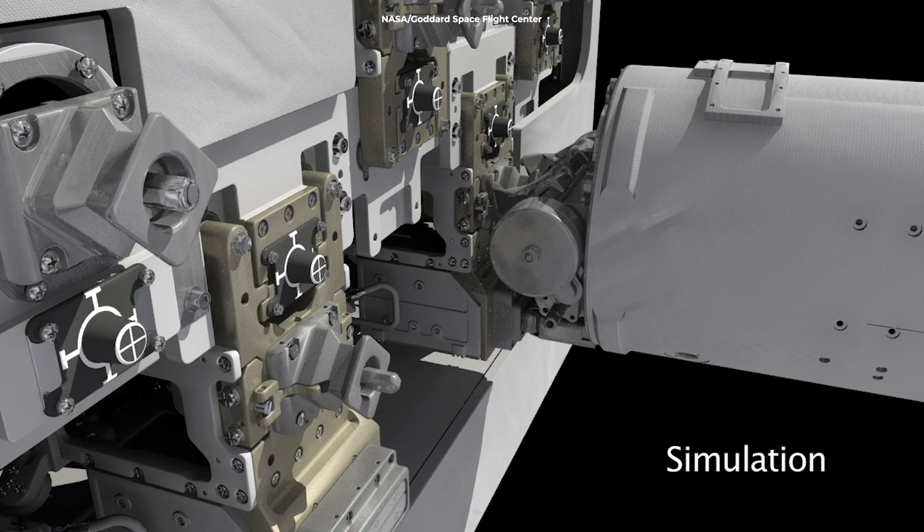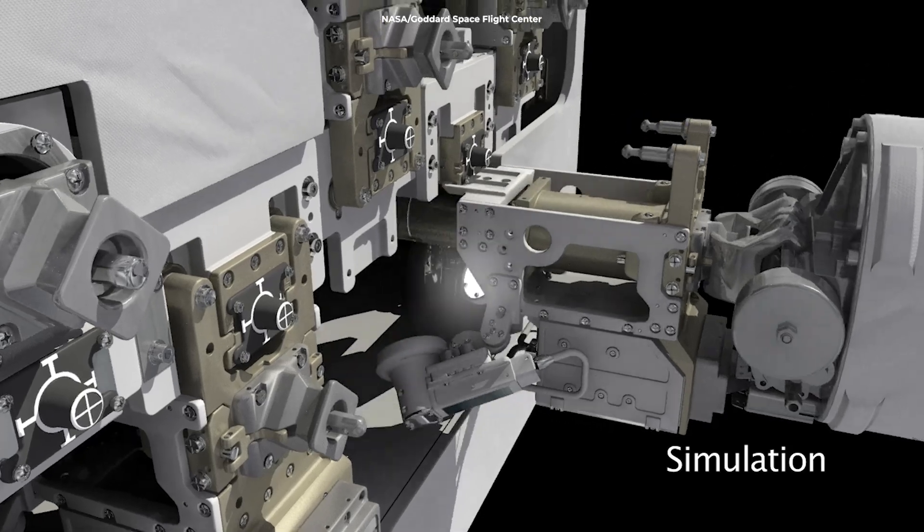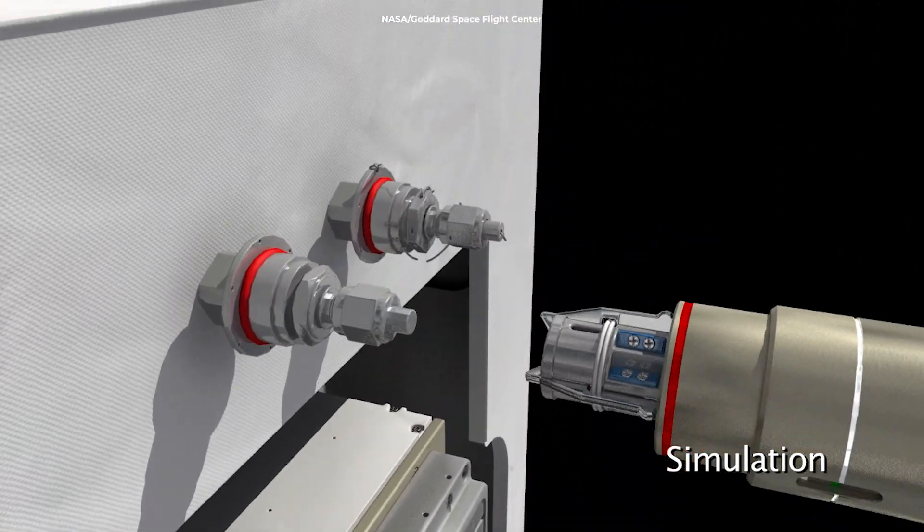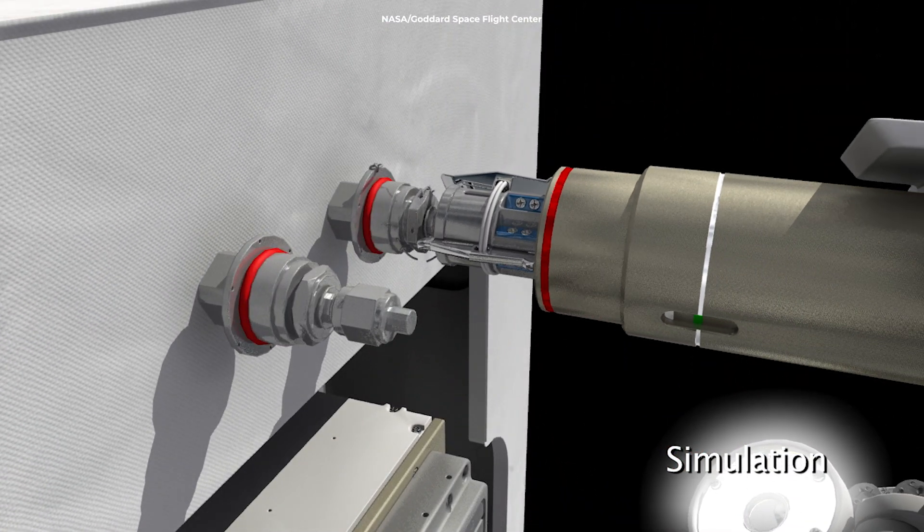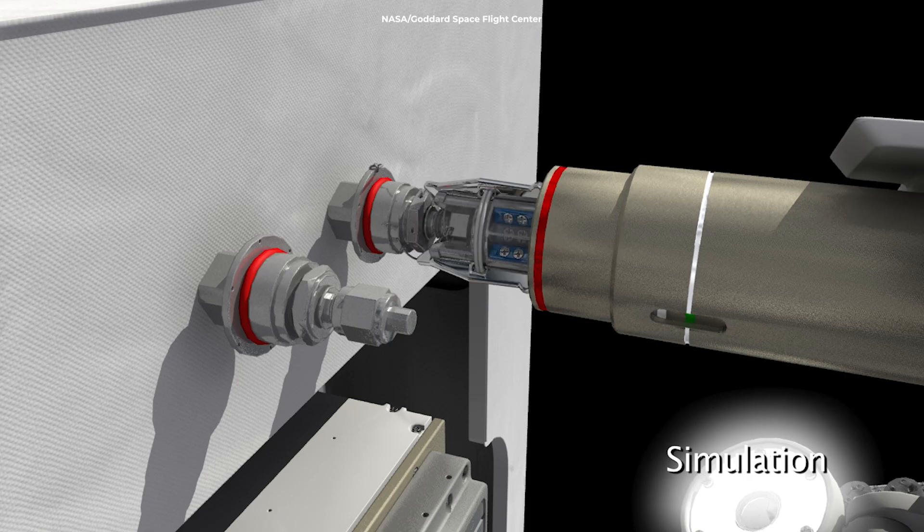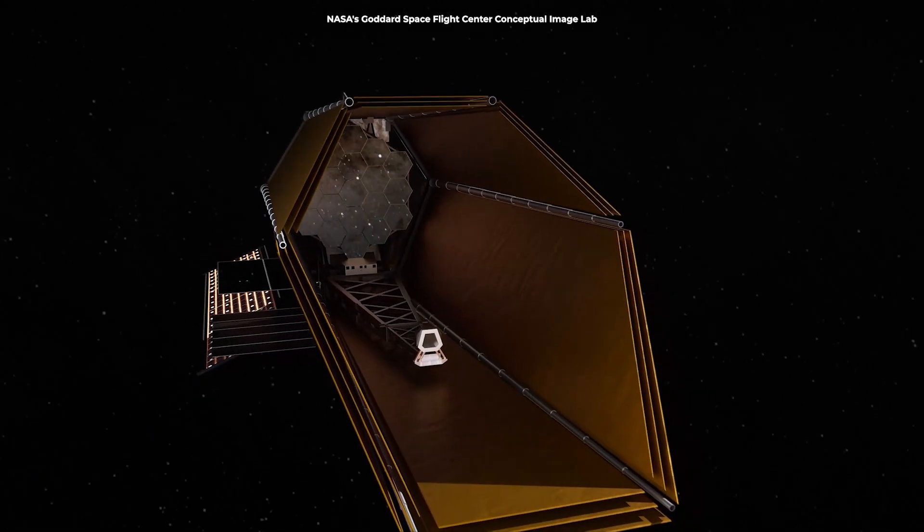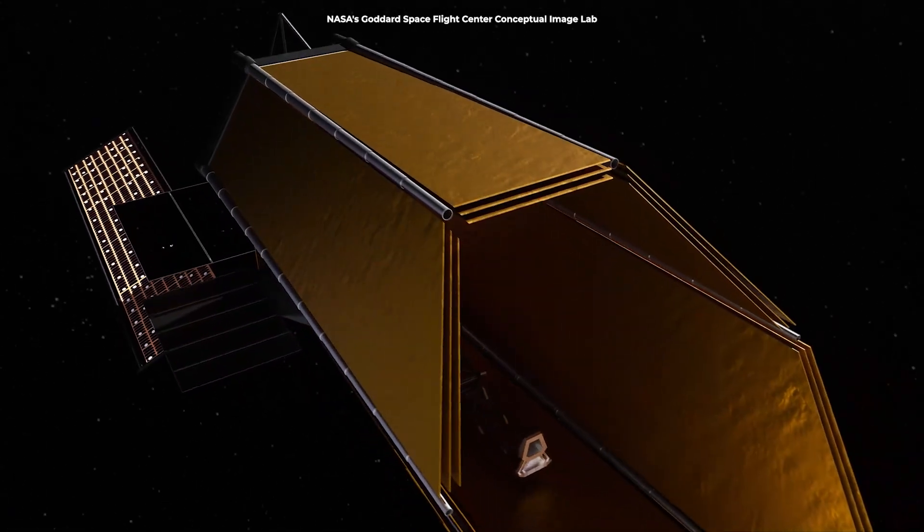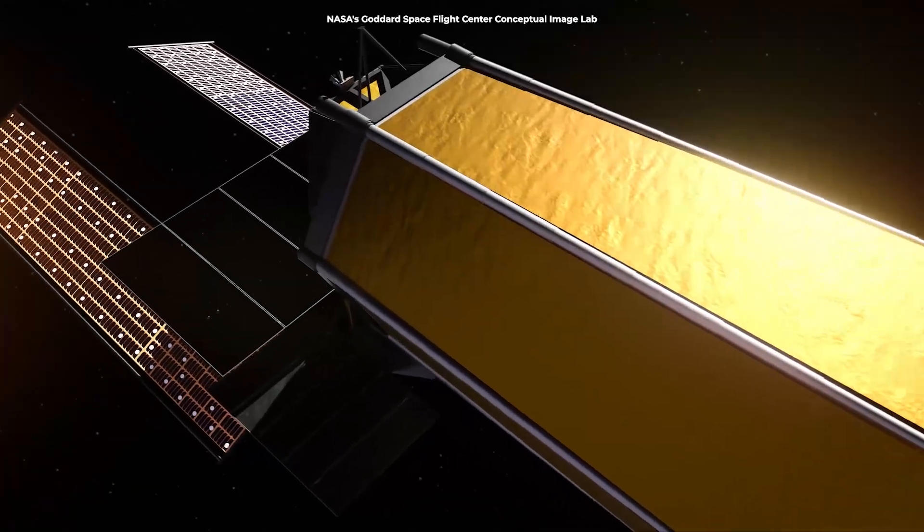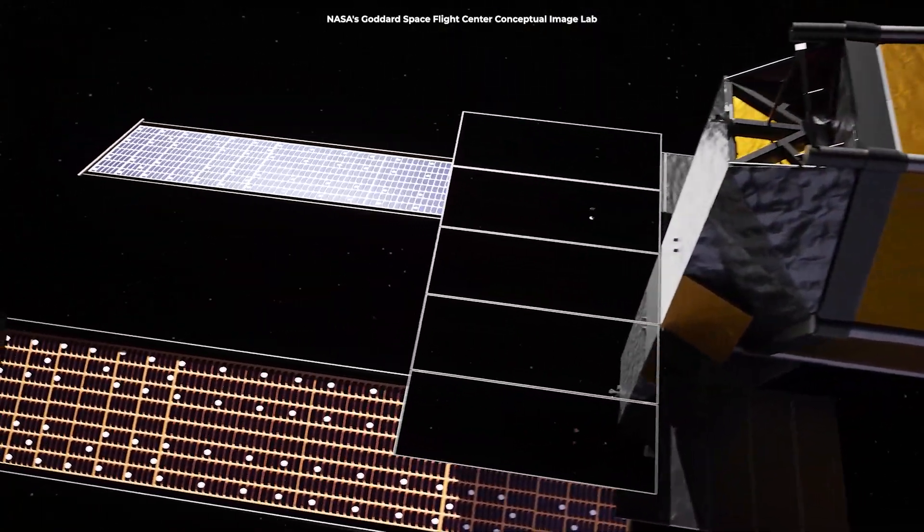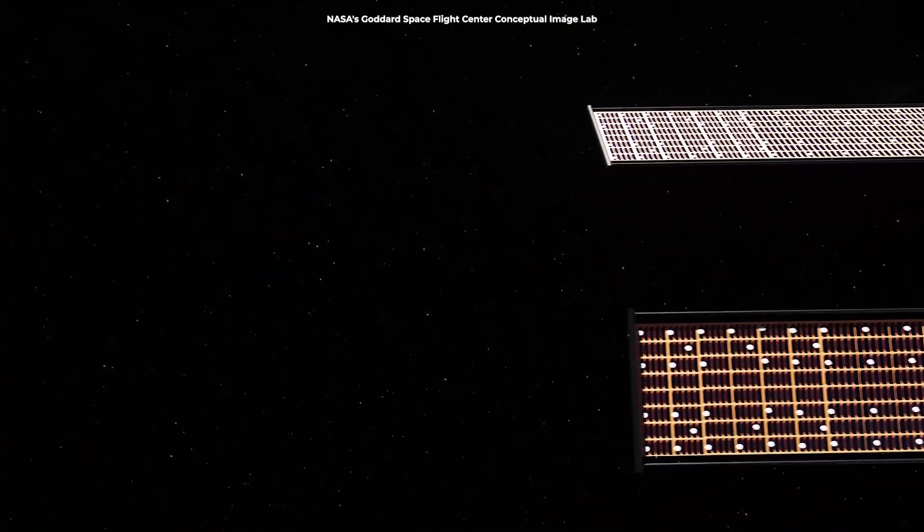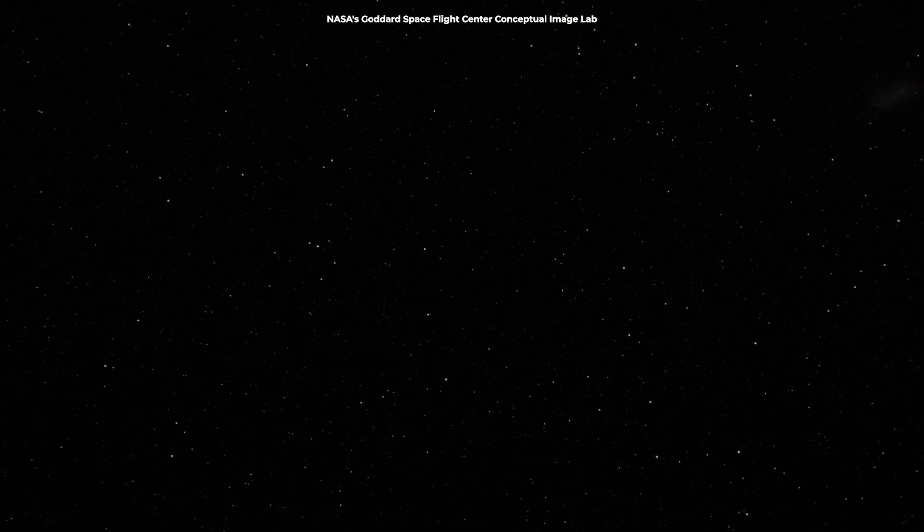But here's the really clever part. This isn't just remote control. These robots have built-in verification systems to prevent any accidental contact with sensitive parts like solar arrays and radiators. This means the Habitable Worlds Observatory isn't just a static telescope. It's an evolving platform that can be upgraded with new technology throughout its lifetime, keeping it at the cutting edge of our search for life in the universe.